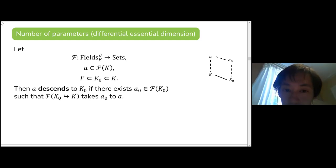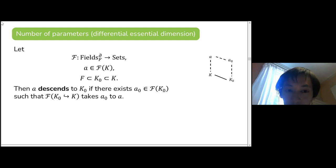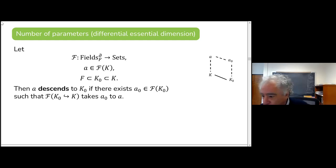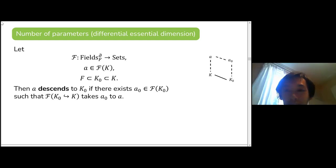The functor F: the whole thing depends on the choice of functor. For example, one choice is cubic polynomials up to simplifying; another is differential modules. On the morphisms, the functor takes the inclusion K₀ ↪ K by sending a differential module over K₀ to its tensor product over K.